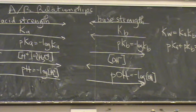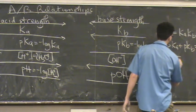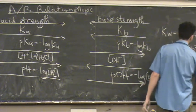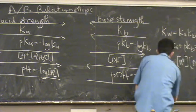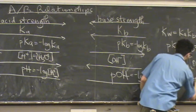So those two are going to vary also. For the next one, Kw equals H plus concentration times the OH minus concentration. And then for the very last one, pH plus pOH equals 14.